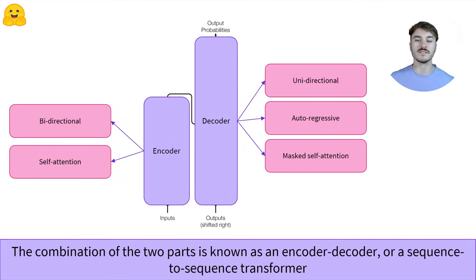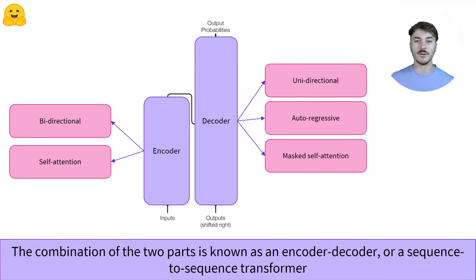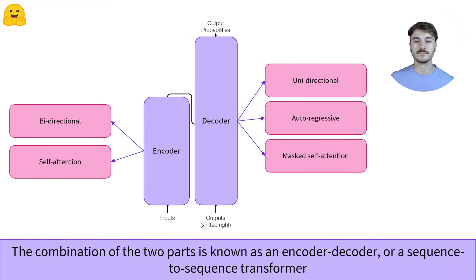Combining the two parts results in what is known as an encoder-decoder, or a sequence-to-sequence transformer. The encoder accepts inputs and computes a high-level representation of those inputs. These outputs are then passed to the decoder. The decoder uses the encoder's outputs alongside other inputs to generate a prediction. It then predicts an output, which it will reuse in future iterations, hence the term autoregressive. Finally, to get an understanding of encoders-decoders as a whole, we recommend you check out the video on encoder-decoders.